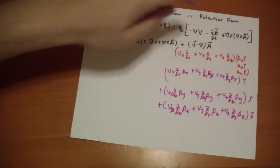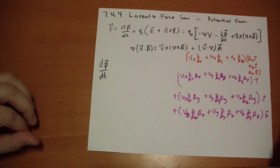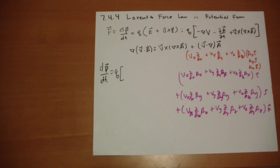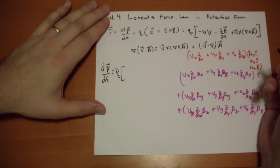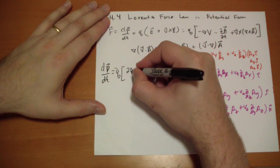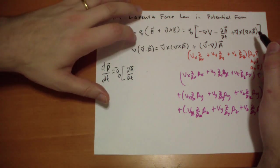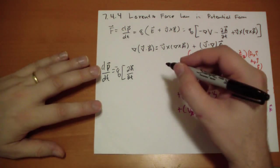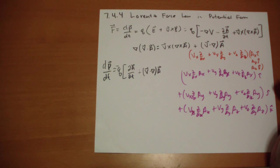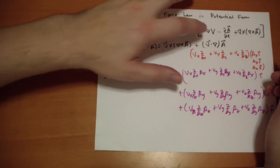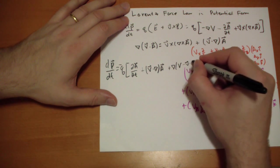If we plug this in, we get the end result. I'm going to express it as change in momentum rather than force, because we're going to start thinking about momentum shortly. So we have the total charge times: combining terms, we get negative Q dA/dt. We invert signs, and then we have plus the gradient of V minus the velocity dot A vector.